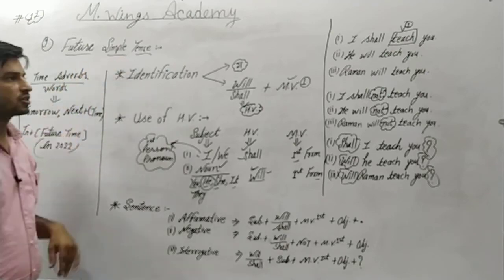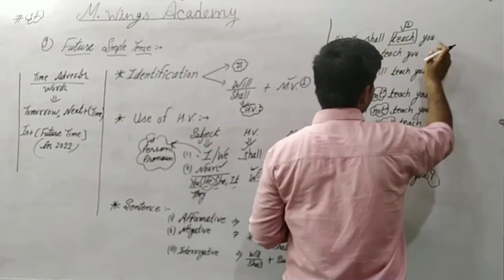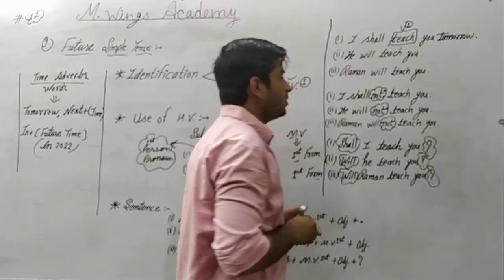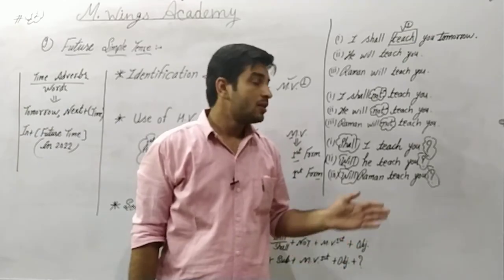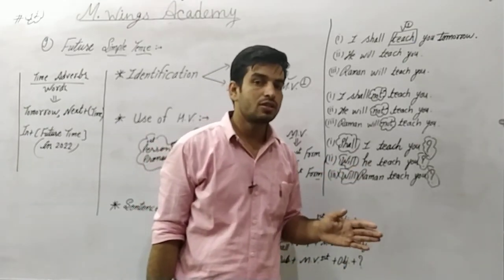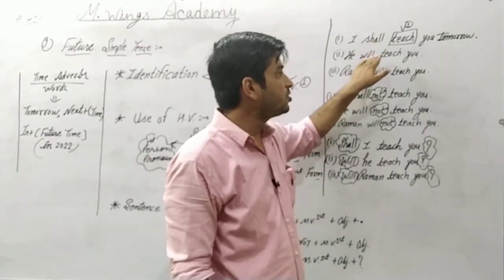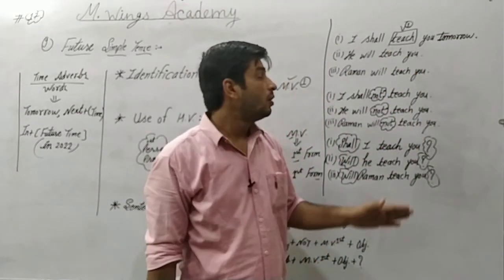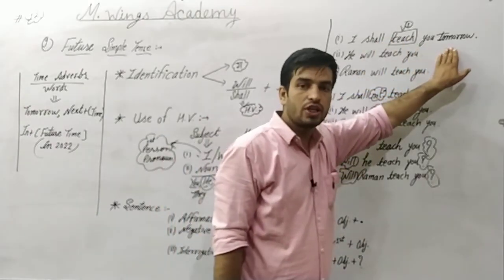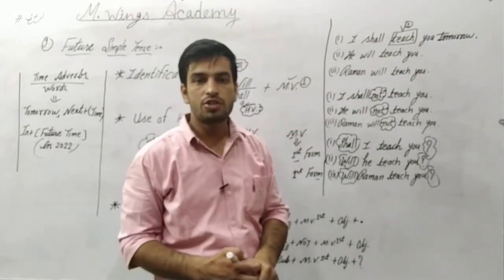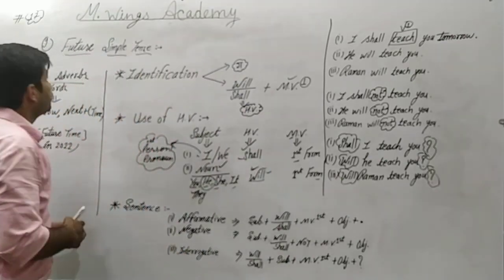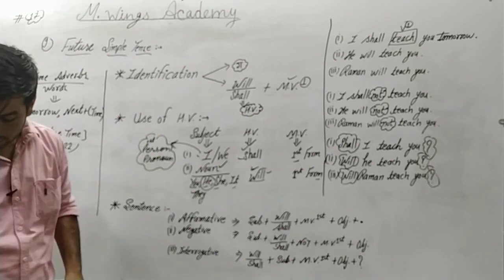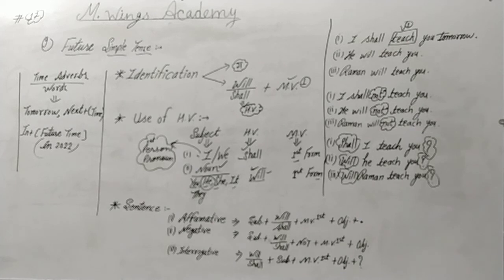So if a sentence uses 'tomorrow', for example 'I will teach you tomorrow', the word 'tomorrow' indicates this is a Future Simple Tense sentence. When you see such future time words used in a sentence, you can always identify and write it as a Future Simple Tense sentence. Thank you.